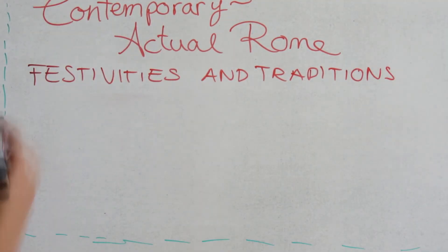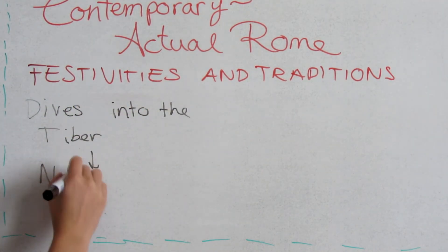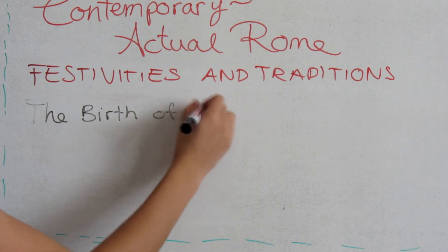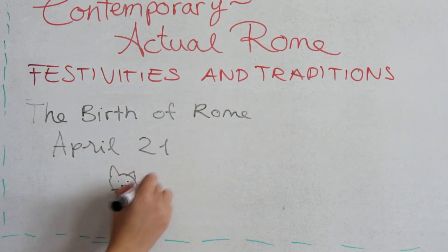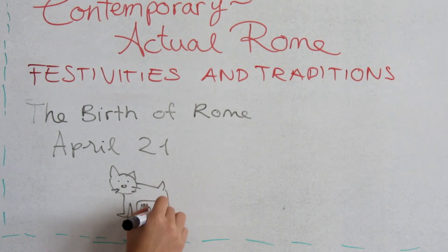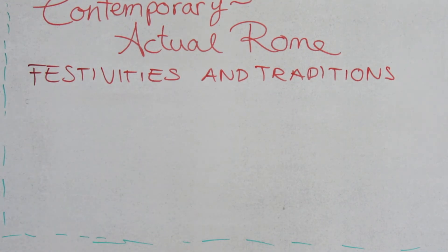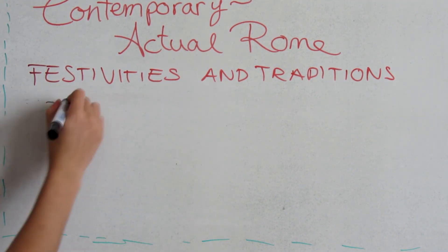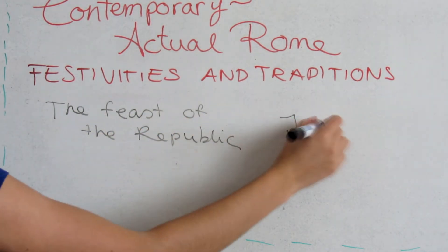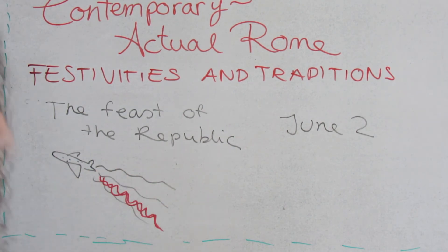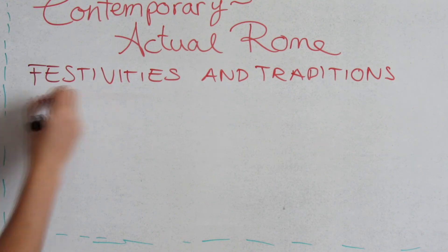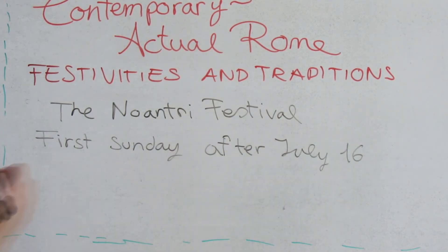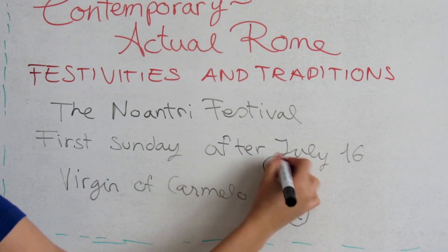Current Roman folk customs include dives into the Tiber during New Year celebrations, during which cliff divers plunge into its cool waters. The birth of Rome, April 21, is the date on which, according to tradition, Romulus founded the city. April 21 is celebrated with performances in costumes, musical events and recreational events. On May 1, the workers' unions organize a free concert. The Feast of the Republic on June 2 features the traditional military parade. The Noantri Festival takes place in Trastevere; the first Sunday is celebrated after July 16th on the occasion of the cult of the Virgin of Carmel.